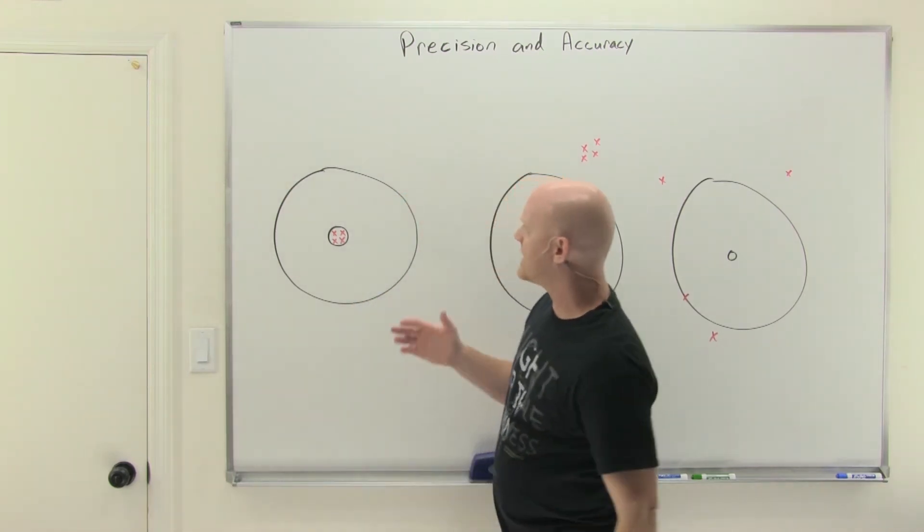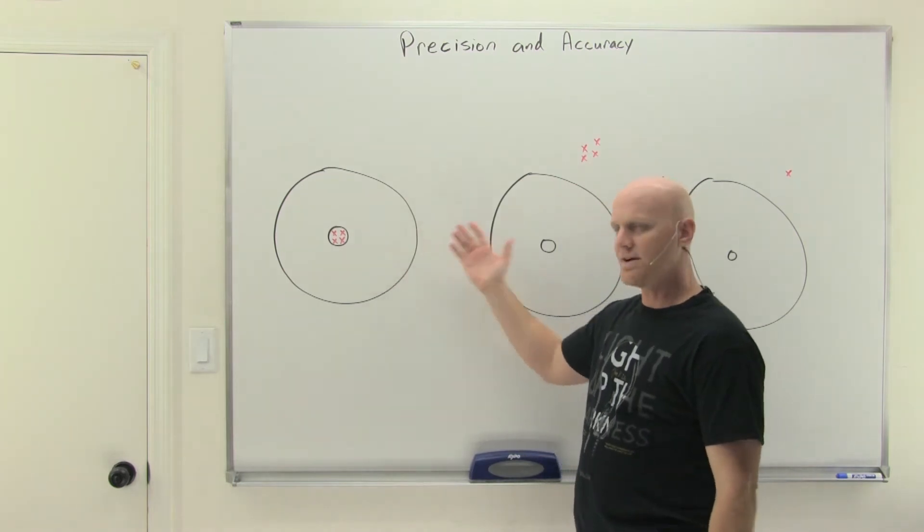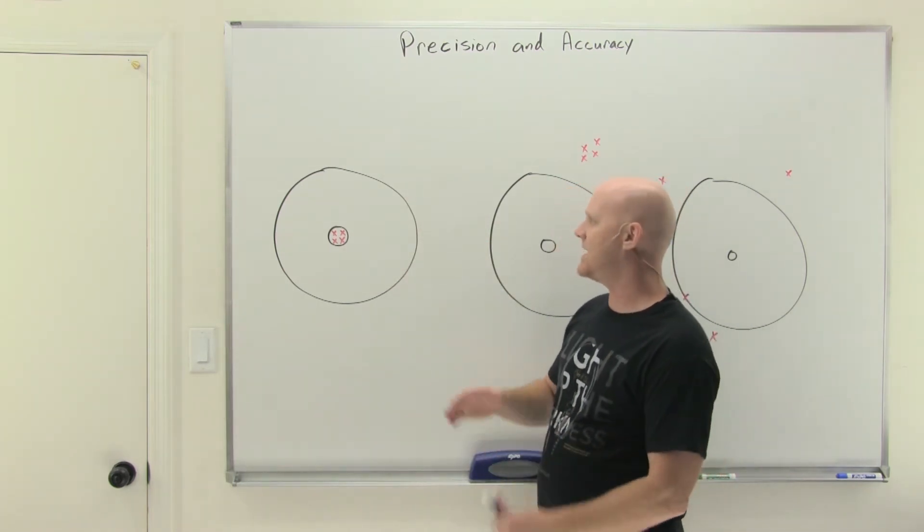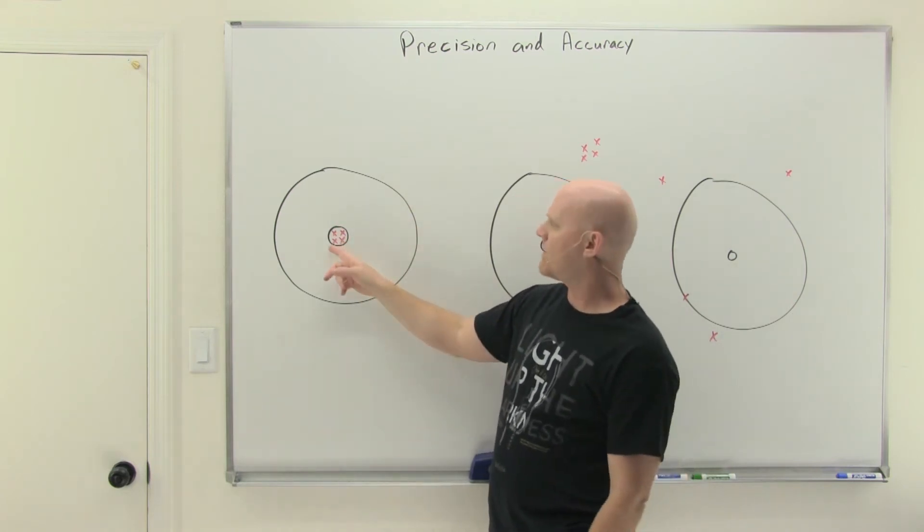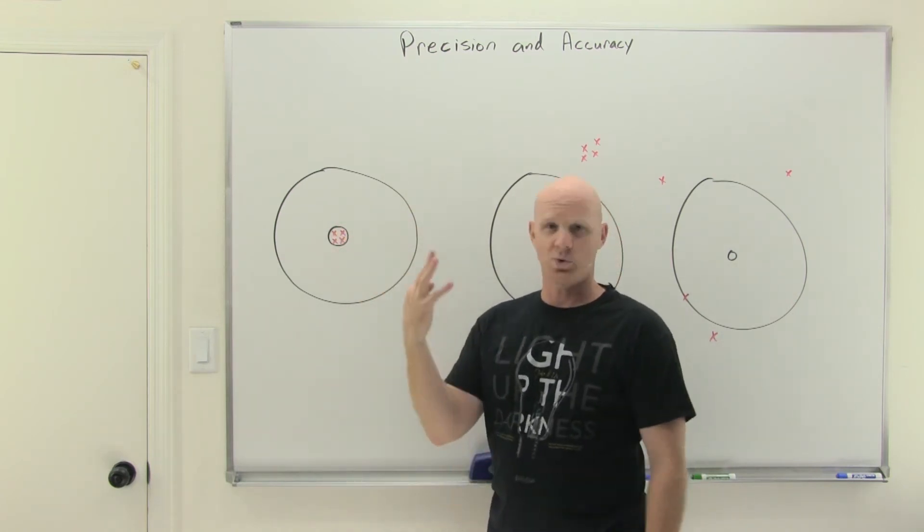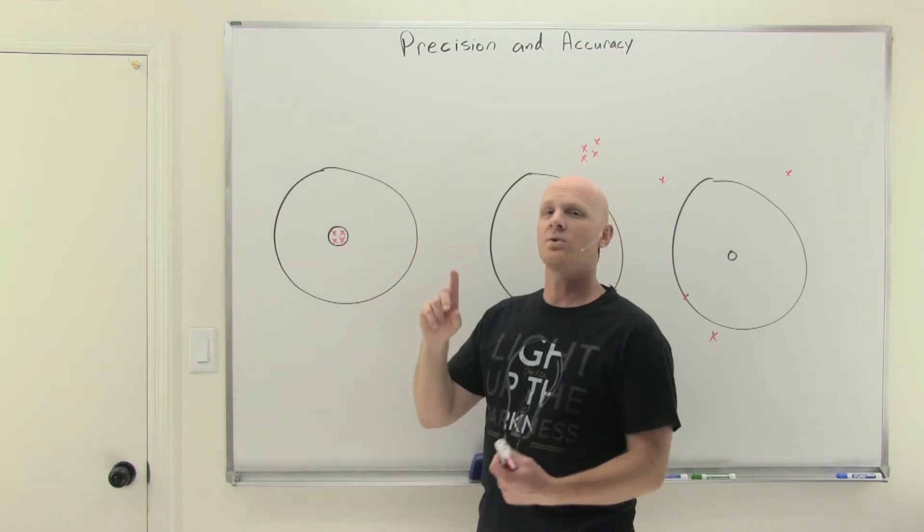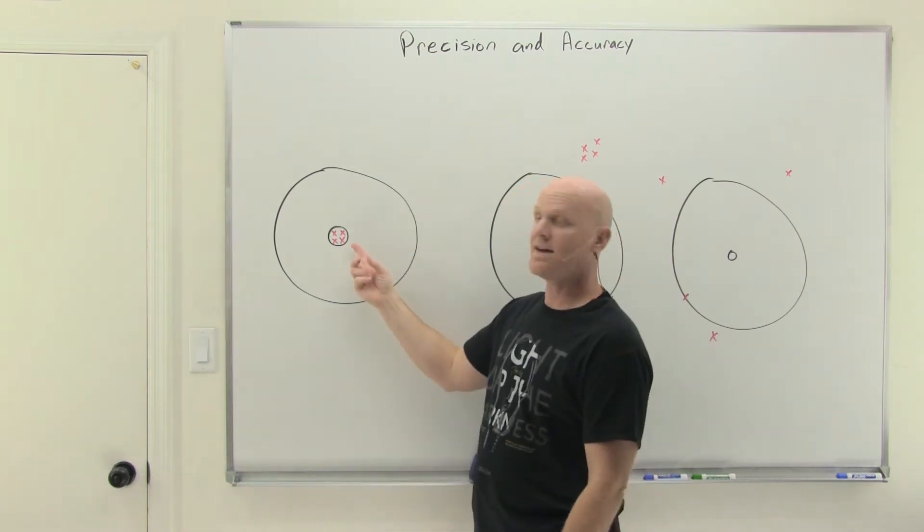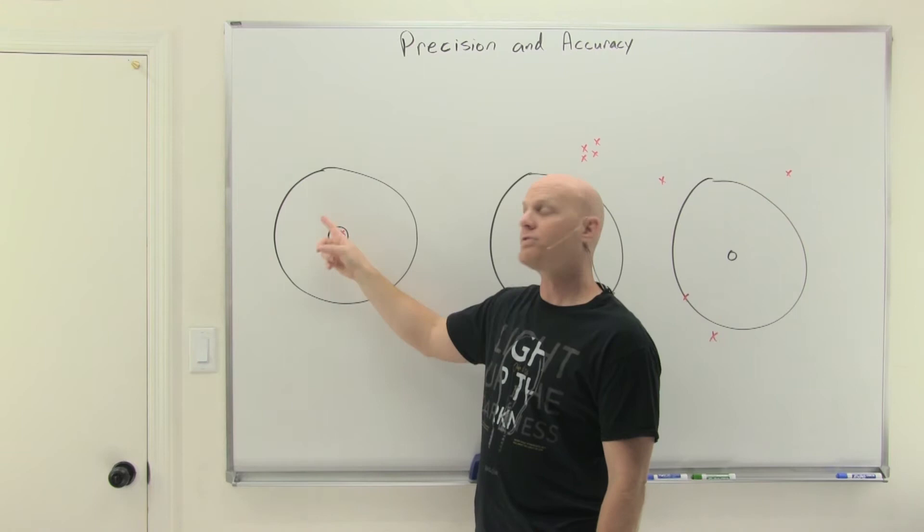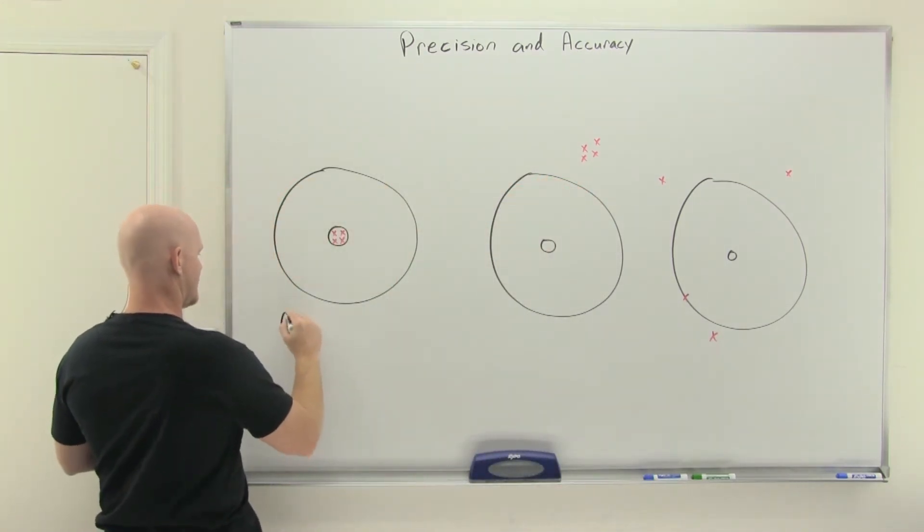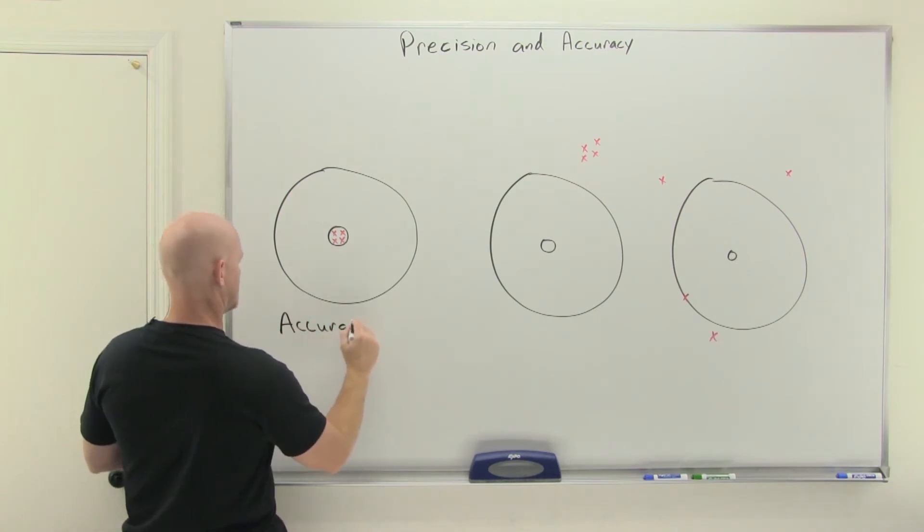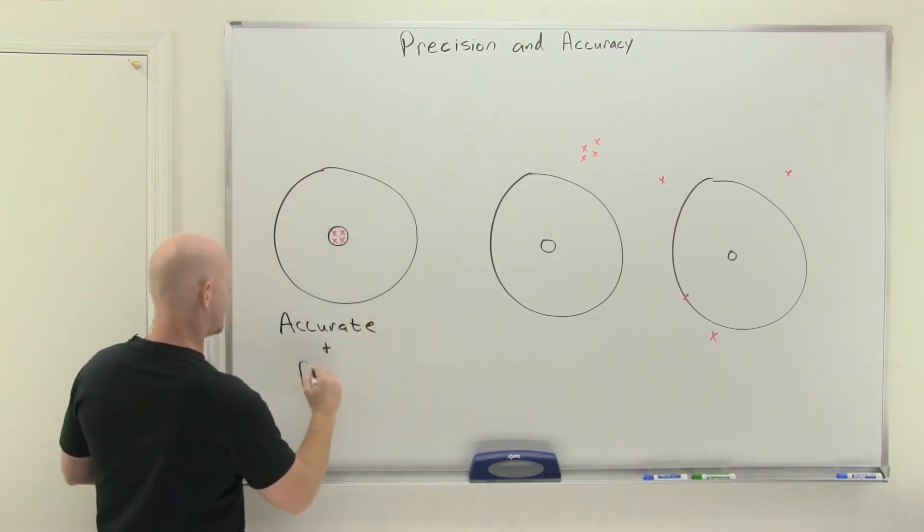We often like to give you examples with targets here to kind of show you the difference between accuracy and precision. In this first example, I've got a bullseye here, and so four arrows have all hit the bullseye. My four shots, they all hit the bullseye. And so in this case, they're very accurate. I hit what I was aiming for, but they're also very precise because they're all close together. And so in this case, we'd say these are accurate and precise.